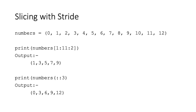To print the entire tuple with a stride, I do not mention the starting or ending index. I say print numbers[::3], giving a stride value of 3. By default, the starting index is 0 and the ending index is the last element, which is 12. Starting from 0, two elements are skipped each time: 1 and 2 are skipped, giving 3; then 4 and 5 are skipped, giving 6; then 7 and 8 are skipped, giving 9; then 10 and 11 are skipped, giving 12. So the output is 0, 3, 6, 9, and 12.